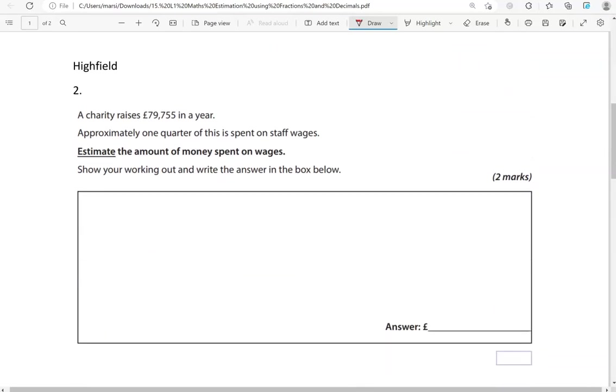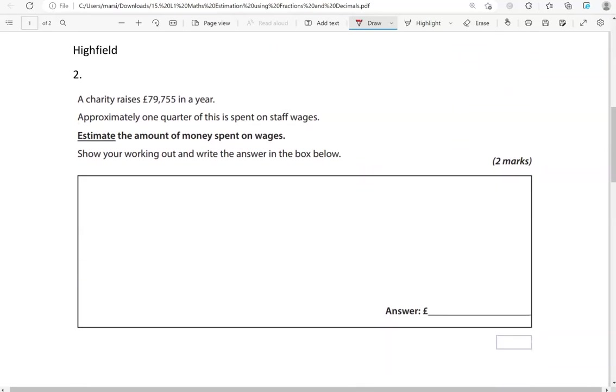A charity raises £79,755 in a year. Approximately one quarter of this is spent on staff wages. Estimate the amount of money spent on wages. Show your working out and write the answer in the box below. So again, we're estimating. £79,755, that is about £80,000.